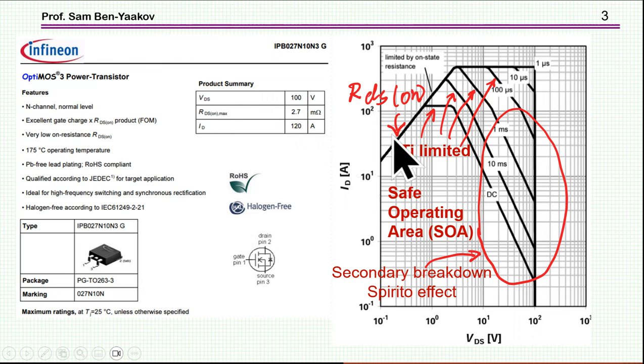Then we have here a limitation, which is the RDS-on. Notice that if I say at this is 1 volt, and the current here is about 180 or something like that, then 1 volt divided by this current is the RDS-on. So you can't go above it because there is a resistance there.